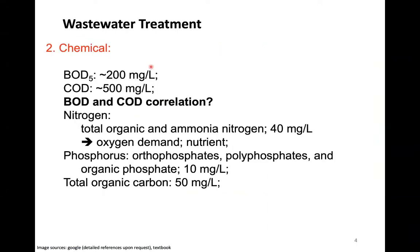For chemical properties, we look at the organic composition of the water. The BOD5 of medium-polluted wastewater is around 200 mg/L. From BOD5 you can calculate the ultimate BOD. The COD (chemical oxygen demand) is around 500 mg/L for medium-polluted wastewater. I have a poll: what is the relationship between BOD and COD?